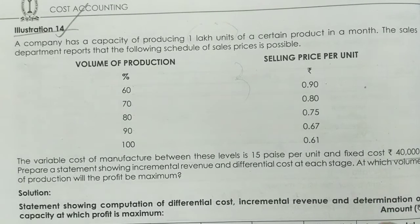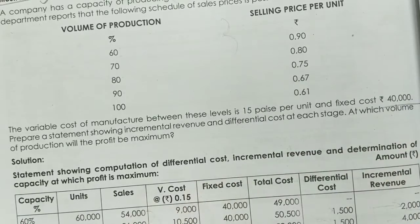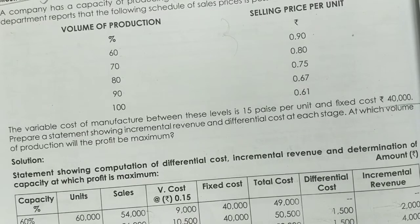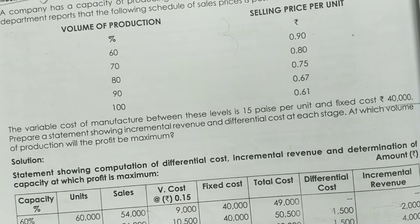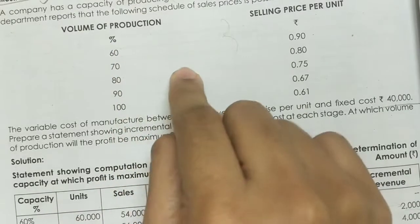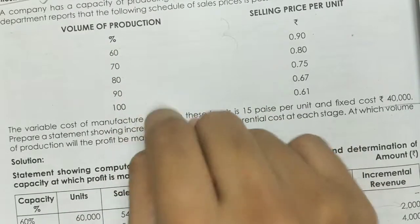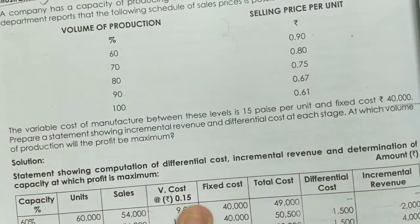At which volume of production will be the maximum profit? Now we are going to take the capacity levels of 60, 70, 80, 90, and 100%. It is the capacity of the capacity.